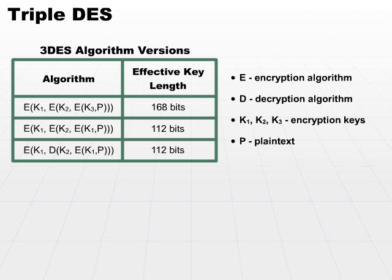The second version only uses two keys. It substitutes key one for key three. So effectively, it will take the plain text, encrypt with key one, take that output, encrypt with key two, and then take that output and encrypt back with key one again.